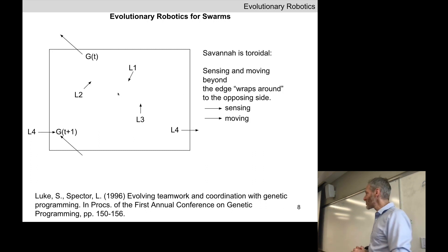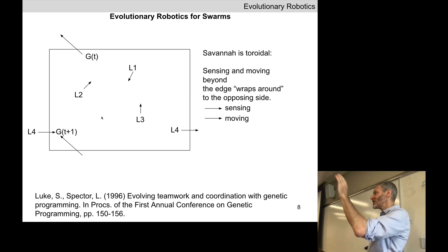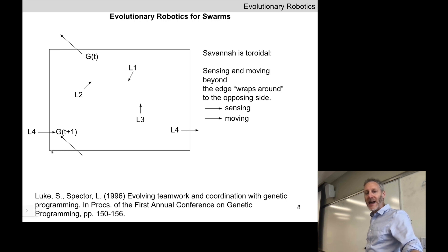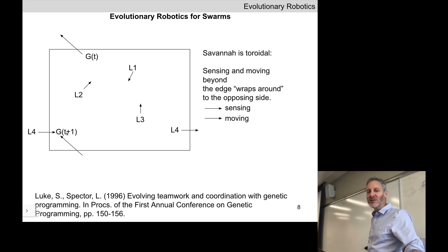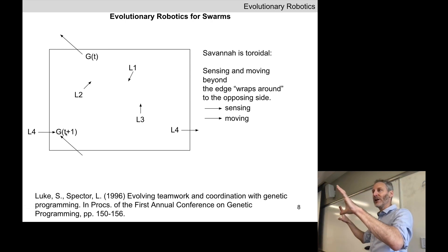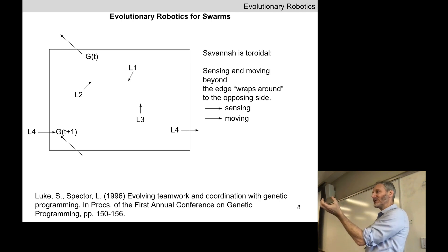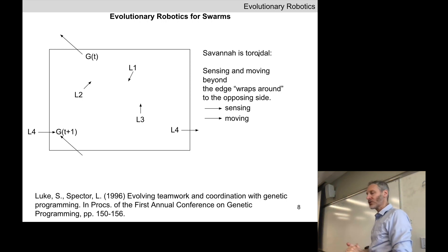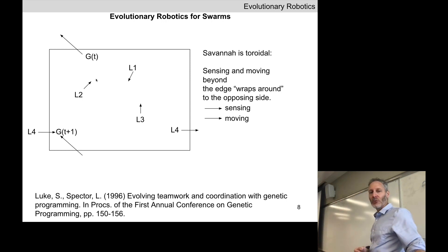The virtual savanna is toroidal. Think of the 2D plane as a sheet of paper: bend it into a cylinder so the two long ends touch, then bend the cylinder into a donut so the two end circles connect. This creates a toroid — effectively an infinite plane where a gazelle or lion can keep moving in a straight line and never hit a wall or fall off the edge. This also makes things difficult for the lions: they cannot corner their prey against a wall.